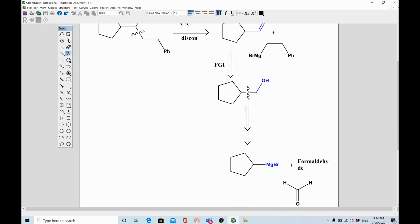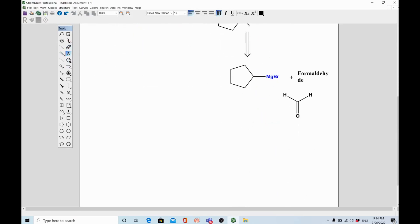All right, this was the analysis or disconnection approach. You can see it. Now if you want to go forward, what you can do is type synthesis. You start from the last step of the retro, becomes the first step in the synthesis. So this is the last step. You take this molecule and react it with formaldehyde. So these two will react together to give you the product.